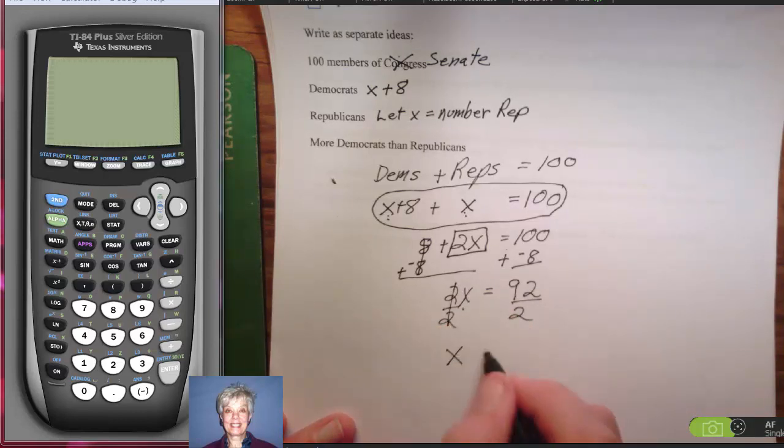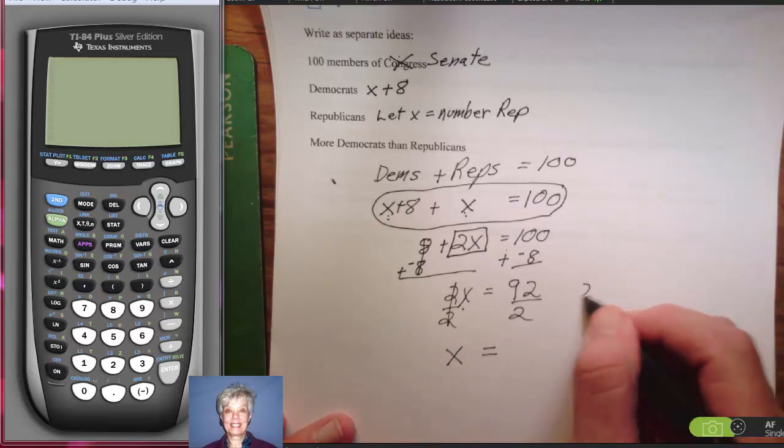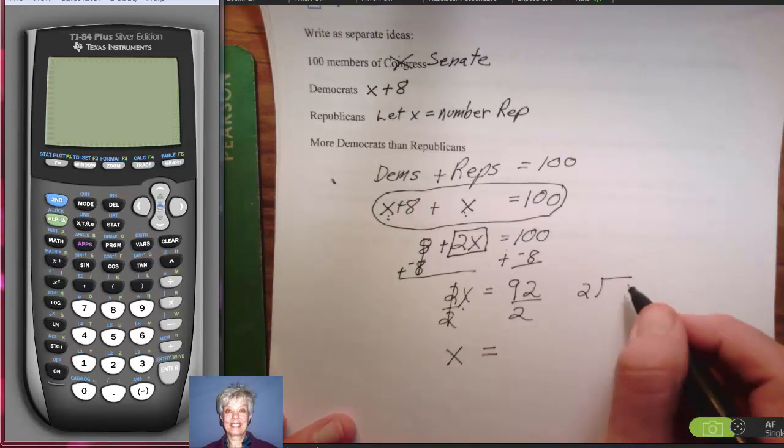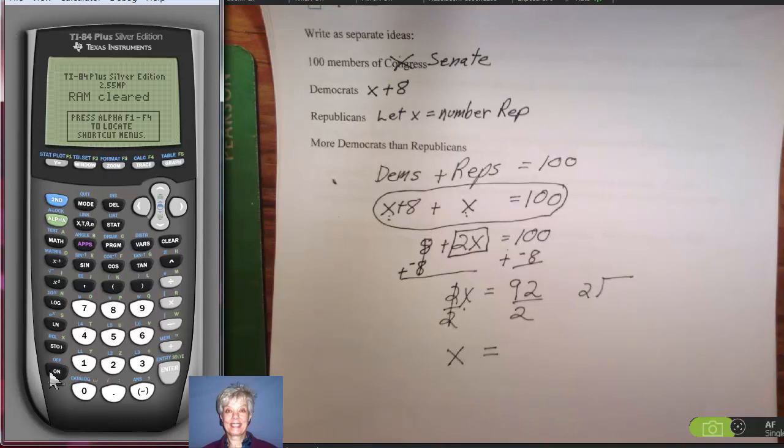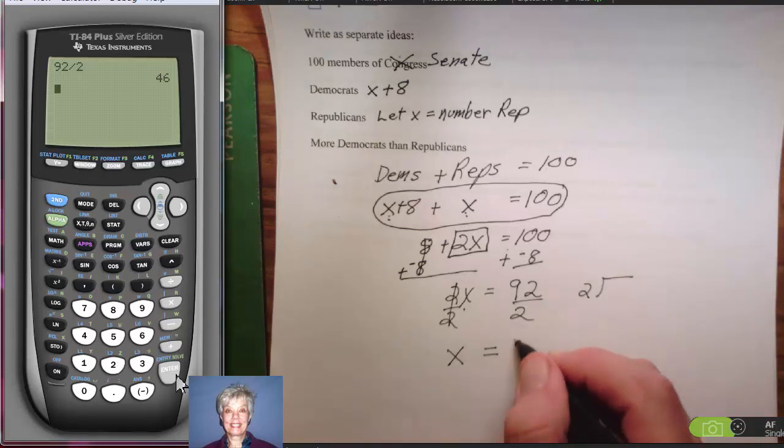This will leave me with X on the left, and I've got to divide 2 into... Oops, I've got my calculator! Why don't I use the calculator? I'm going to come over here and turn it on. And again, and say 92 divided by 2, enter, is 46. So, X equals 46.